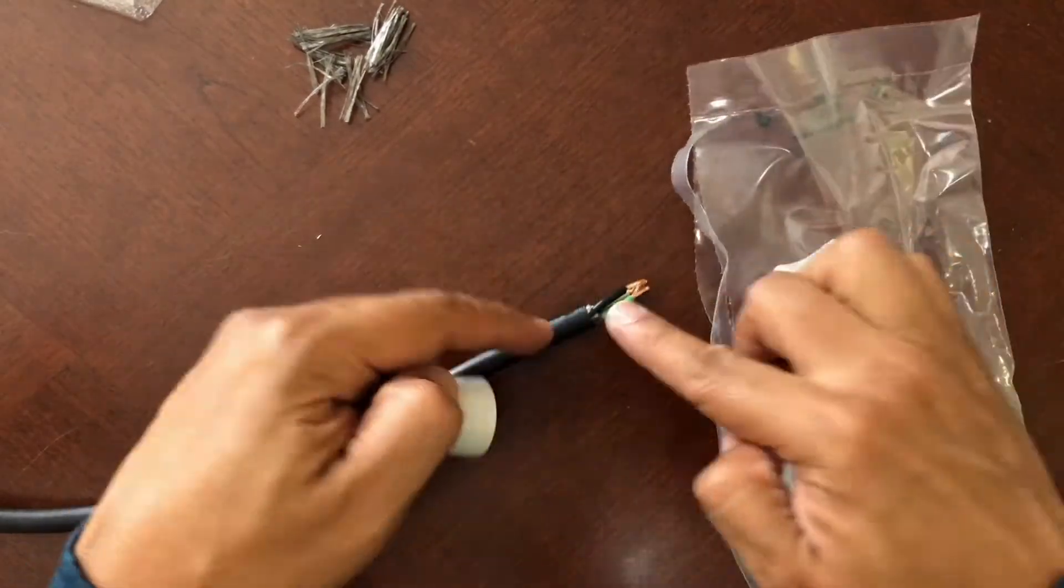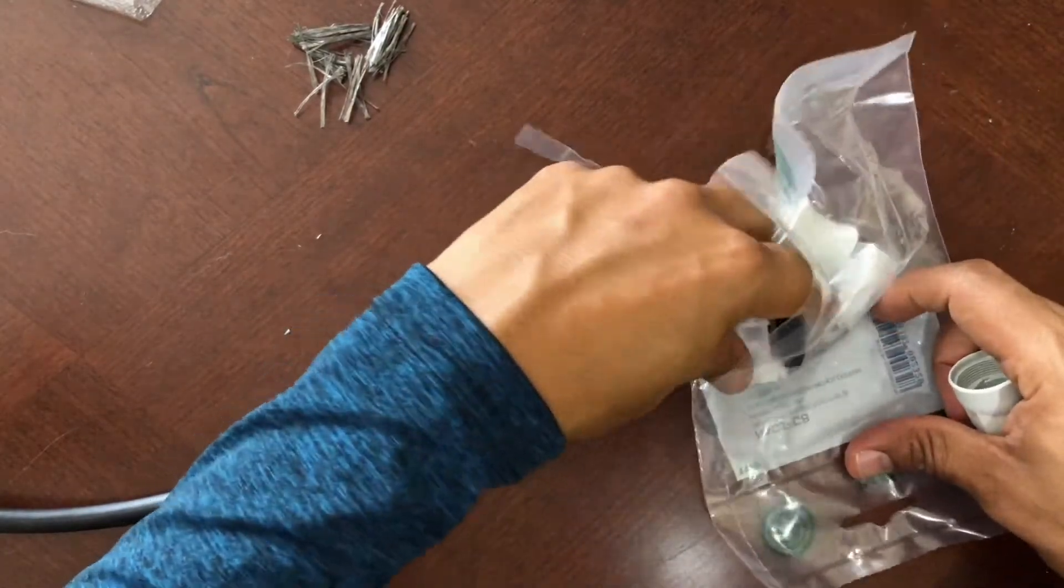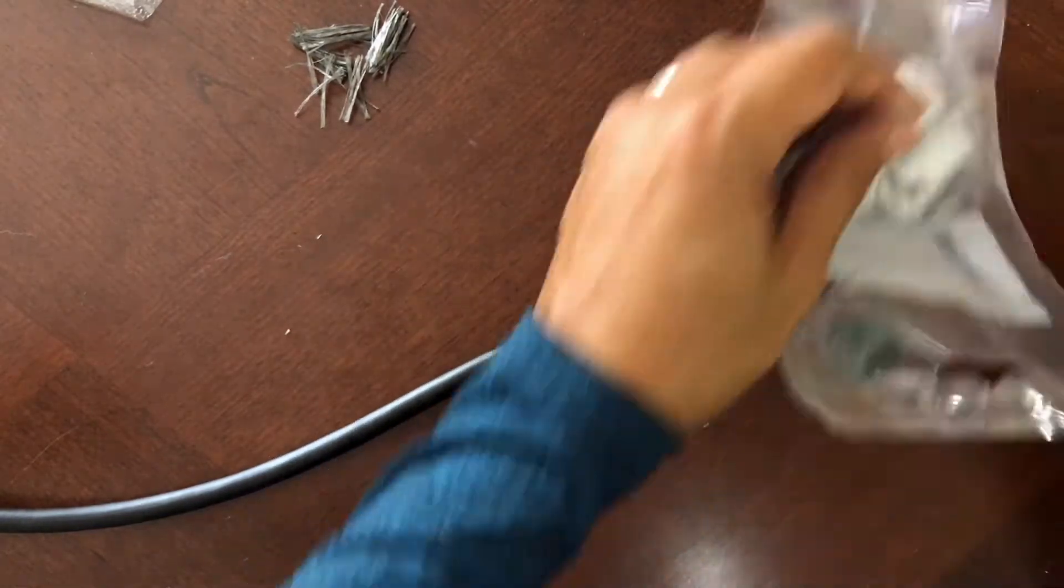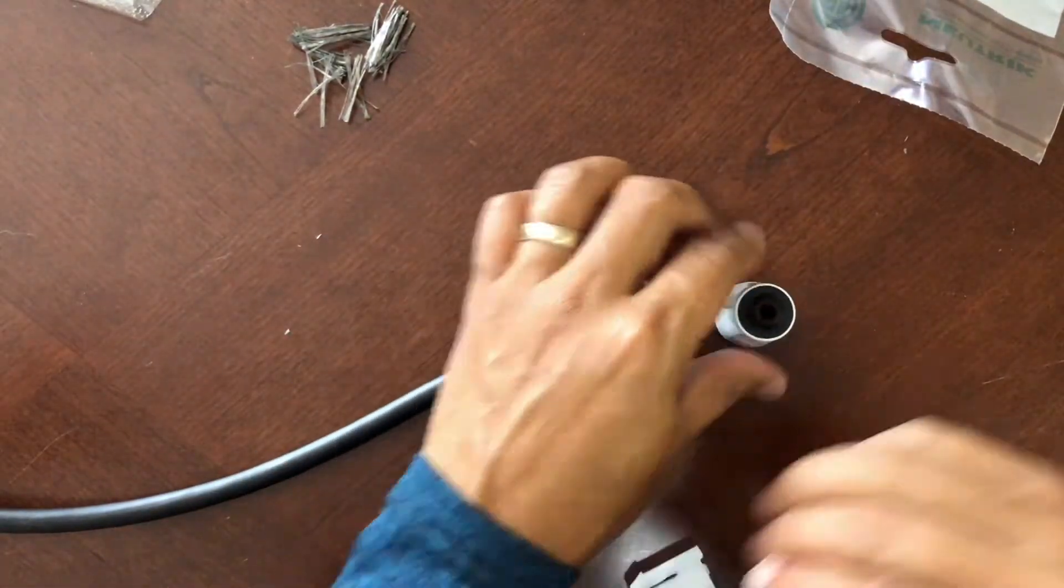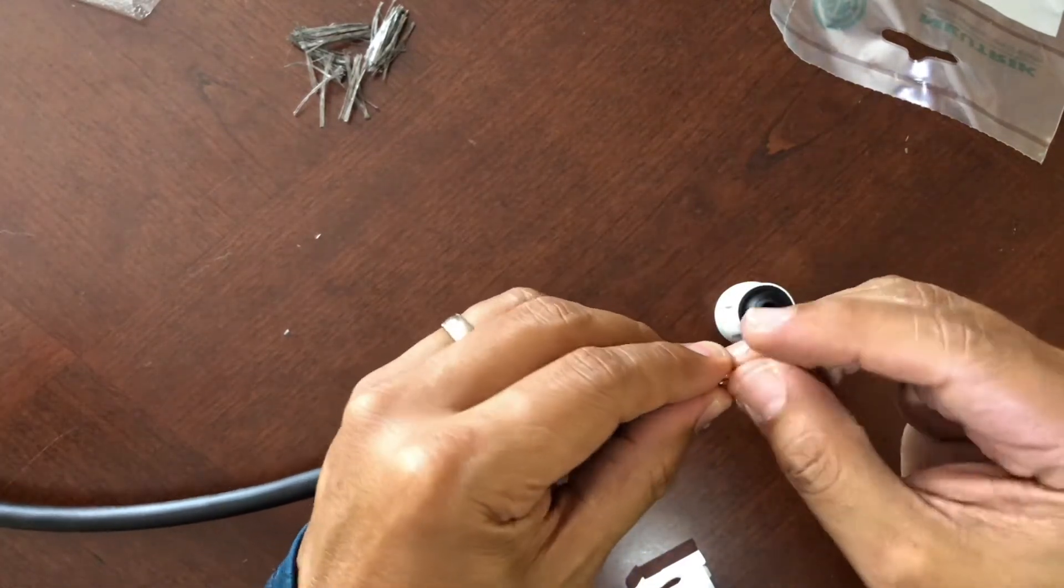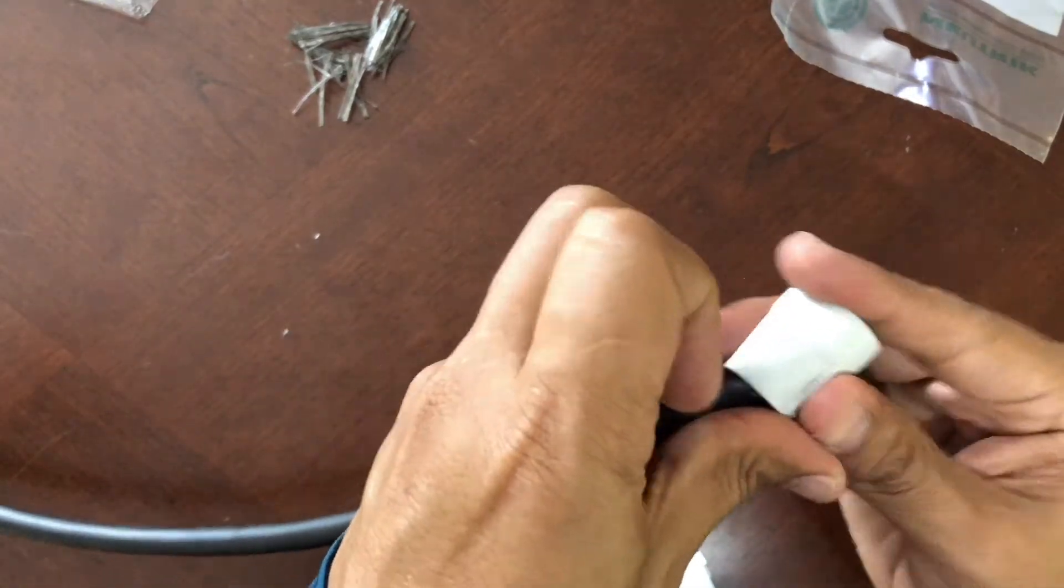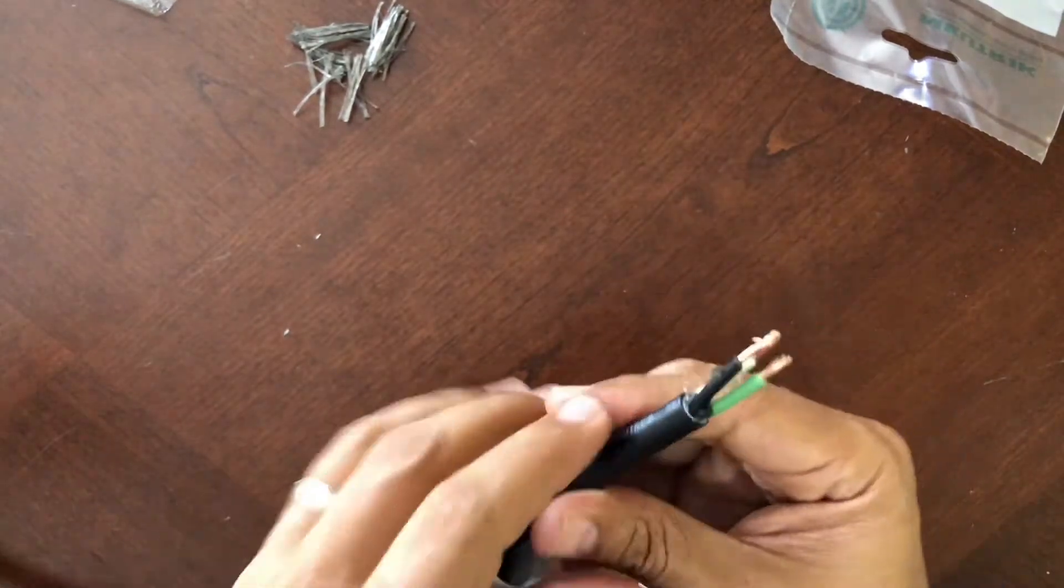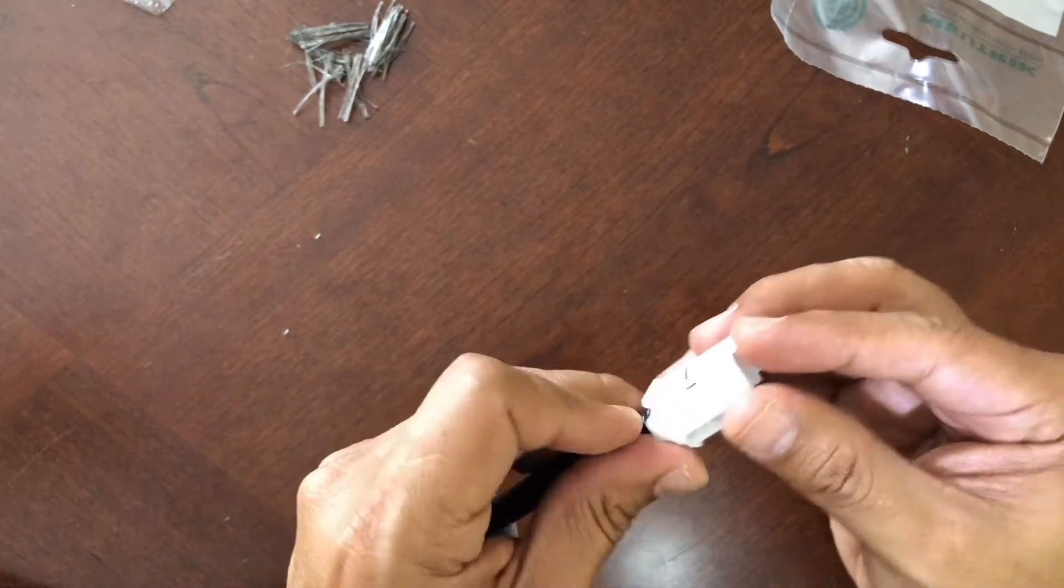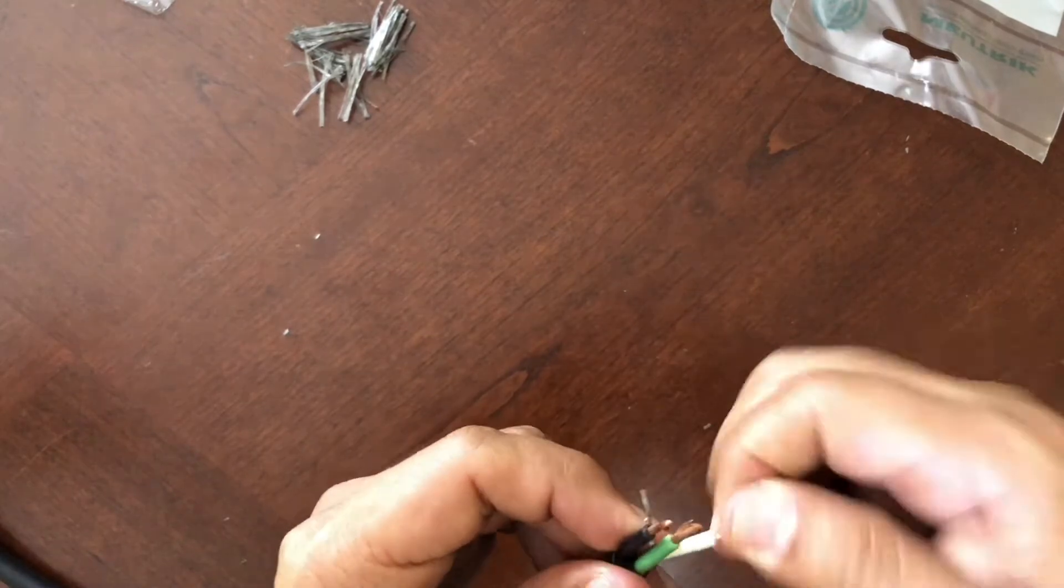The package comes with the cover and two sleeves—one white and one black. They are the same, so you can use either one. Get these three cables together and slide them through the cover like you're seeing here. Then get the sleeve and do the same thing—slide the sleeve through the cable and you're ready to make your connections.